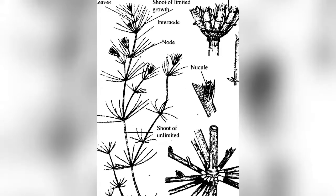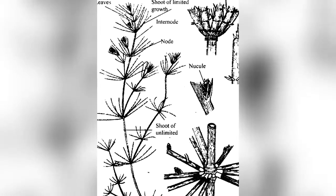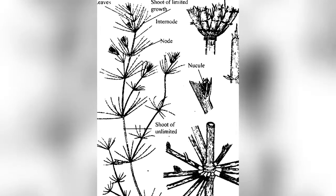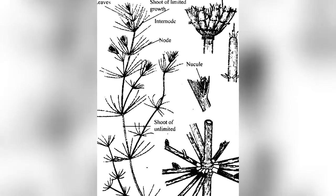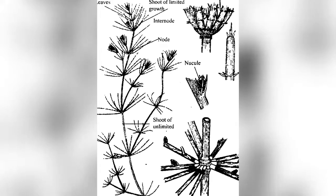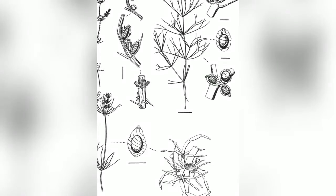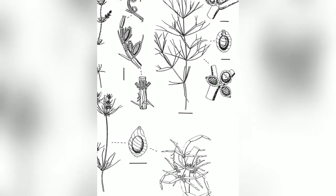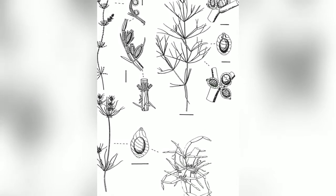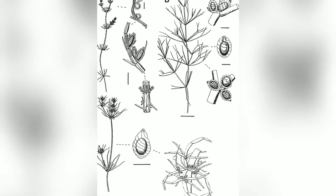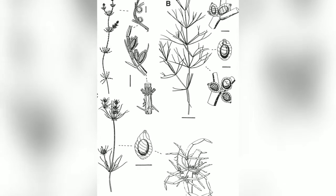Cytoplasmic streaming occurs in the endoplasm along a longitudinal plane. Cytoplasmic streaming is due to alternating contraction and expansion of protein fibrils which remain fixed to the cell wall.